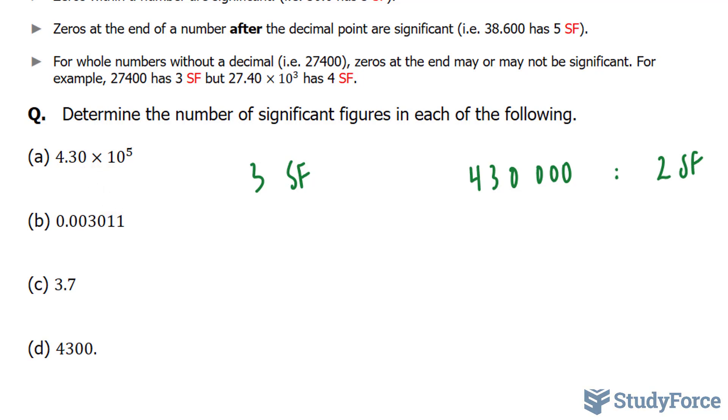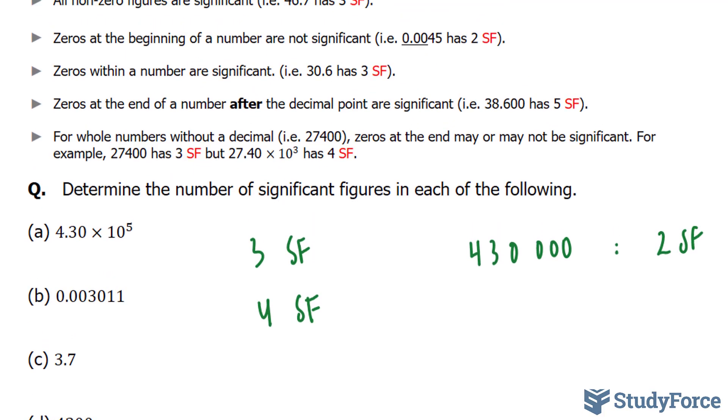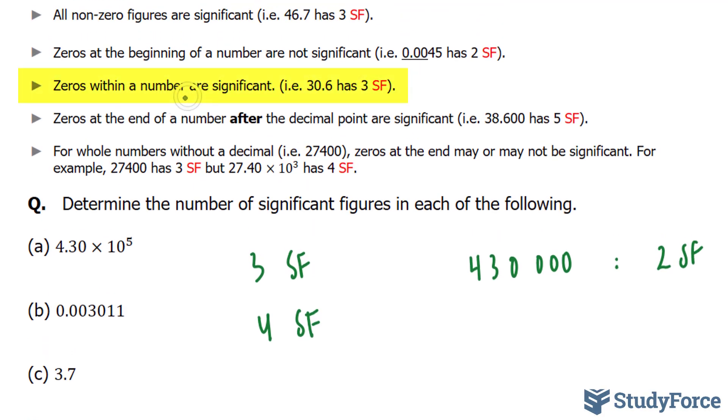Let's move on to the next one, 0.003011. In this case here, we have four significant figures. This time, this zero is considered to be significant because it is within the number. And in our case, that zero is in between the 3 and the 1, so it's also significant.